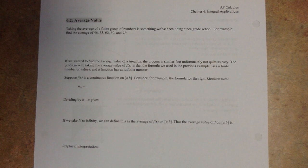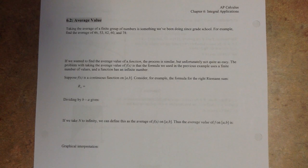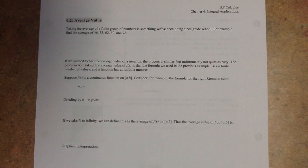If I were to add up all of your test scores and divide by however many of you there are, it would give me your average test score — the mean test score. When we're taking the average value of a function, it's a very similar idea. The only issue is that with a function, you've got an infinite number of values, whereas a normal average uses a finite number of values.